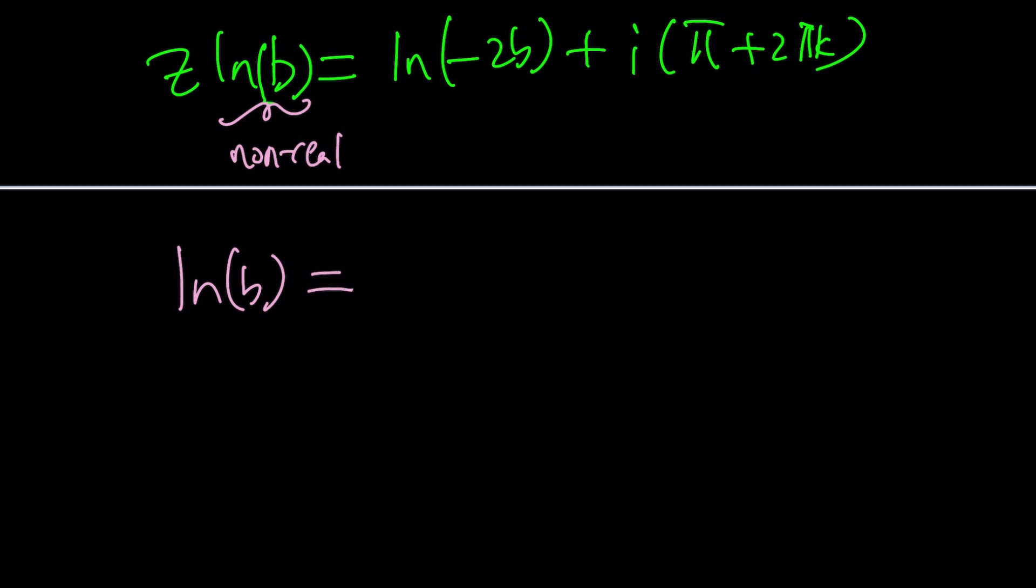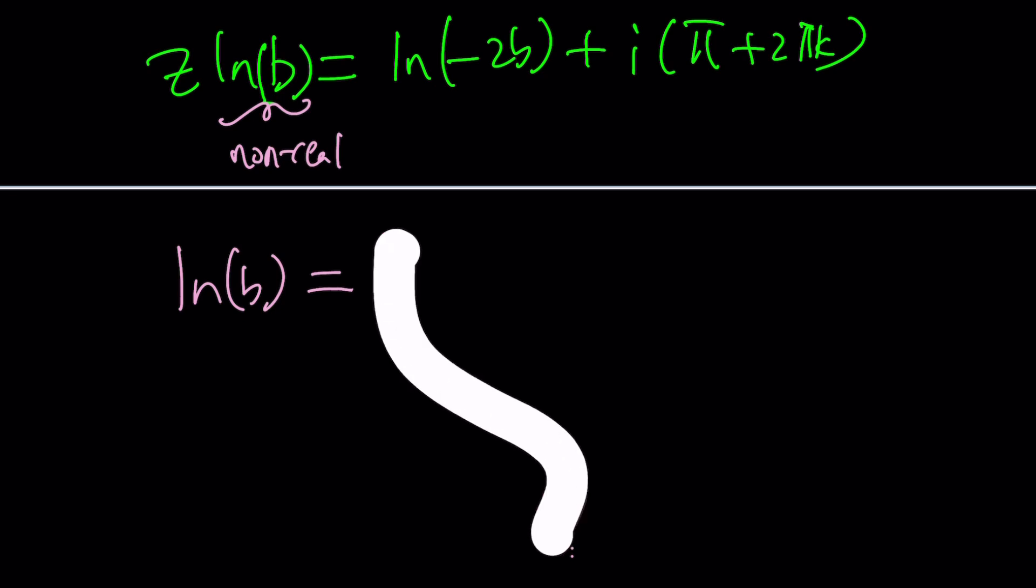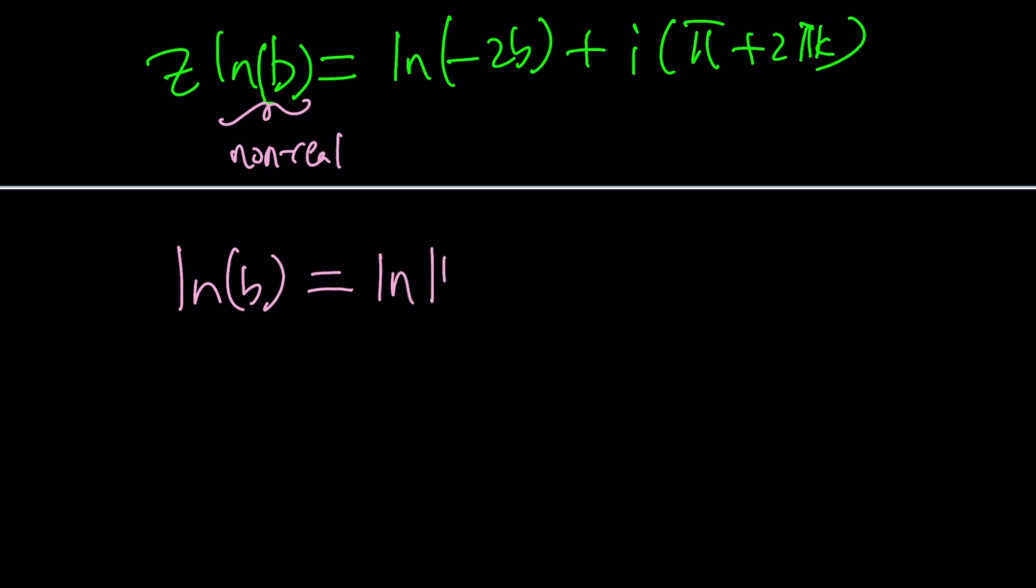We kind of have to find out what it is first. How do you write the natural log of a complex number? You do the absolute value: ln |B| plus i times the angle, which is going to be π. But you need to add multiples of 2π again. And since B is negative, this is going to be ln of negative B. That's going to replace ln B here.